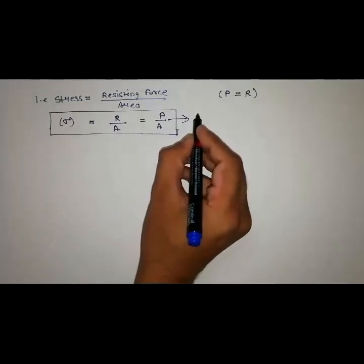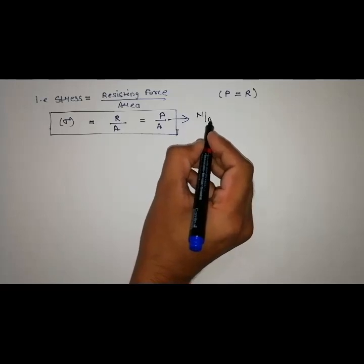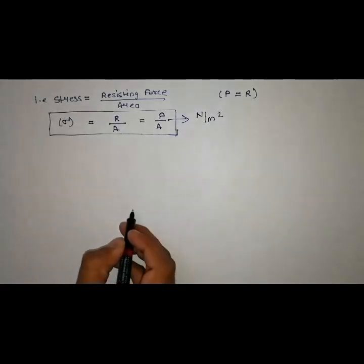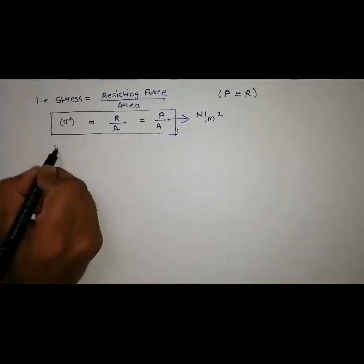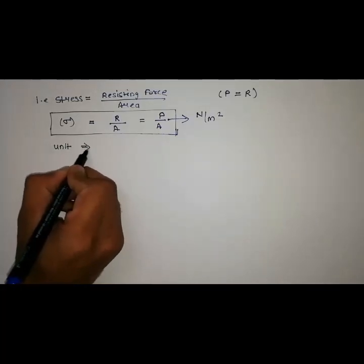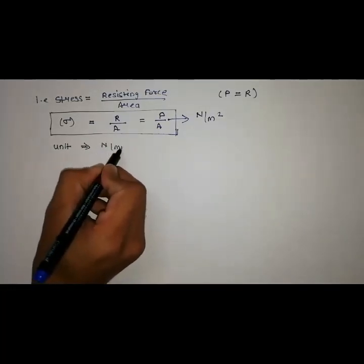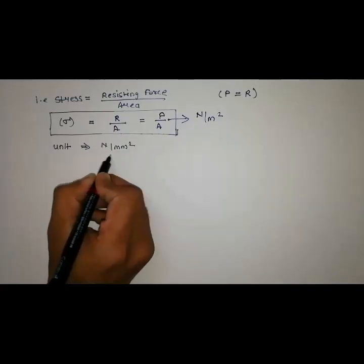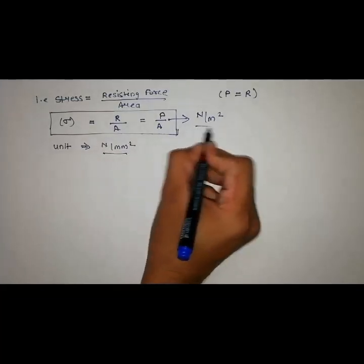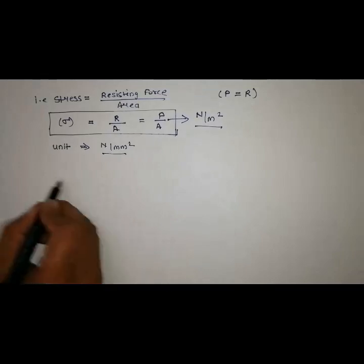According to definition, unit we get is Newton per meter square. But mostly we mention the unit of stress as Newton per mm square. So the relation between Newton per mm square and Newton per meter square is - let's see.